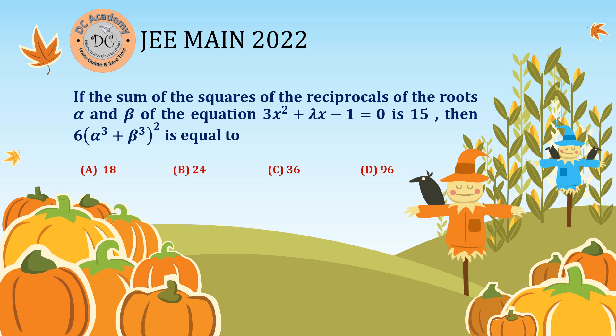In this video we are going to solve a problem which appeared in JEE 2022. In this particular problem it is given that the sum of the squares of the reciprocals of the roots α and β of a given equation is 15. α and β are the roots of the equation 3x² + λx − 1 = 0. We need to find the value of 6(α³ + β³)². Let's go ahead and solve the problem.